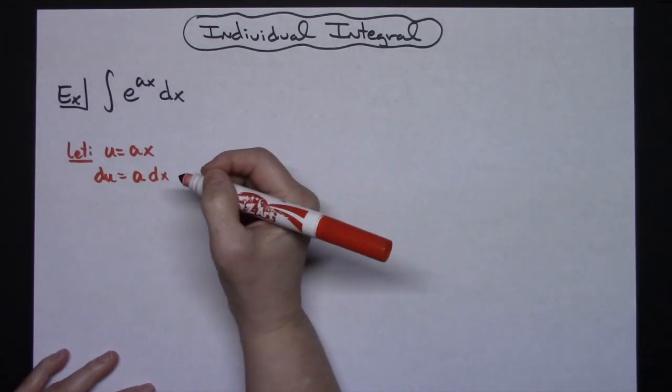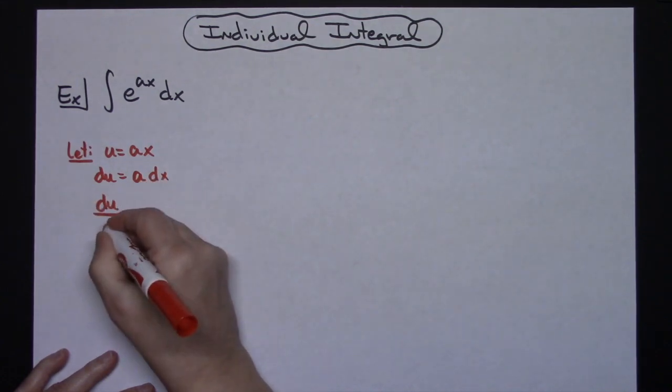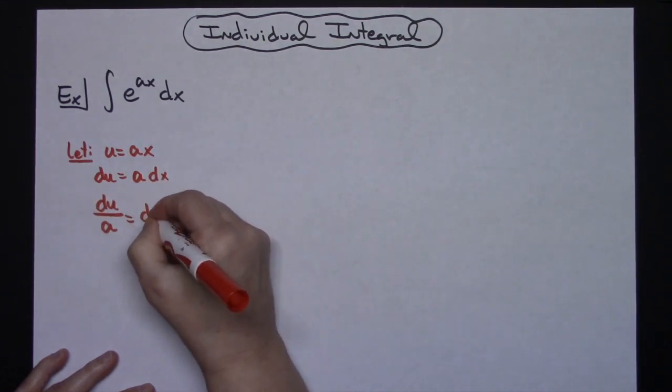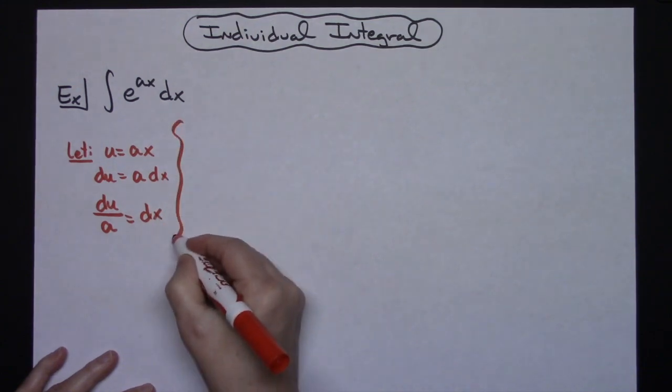I'm going to go ahead and solve all the way down for dx. So I'll have du over a is equal to dx.